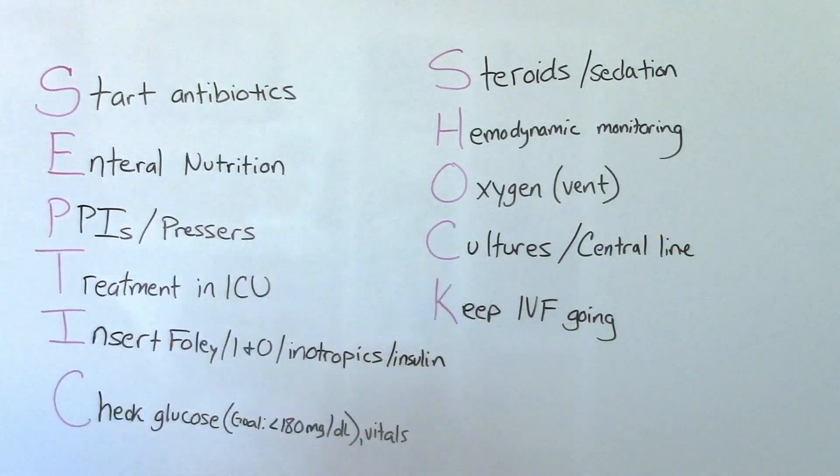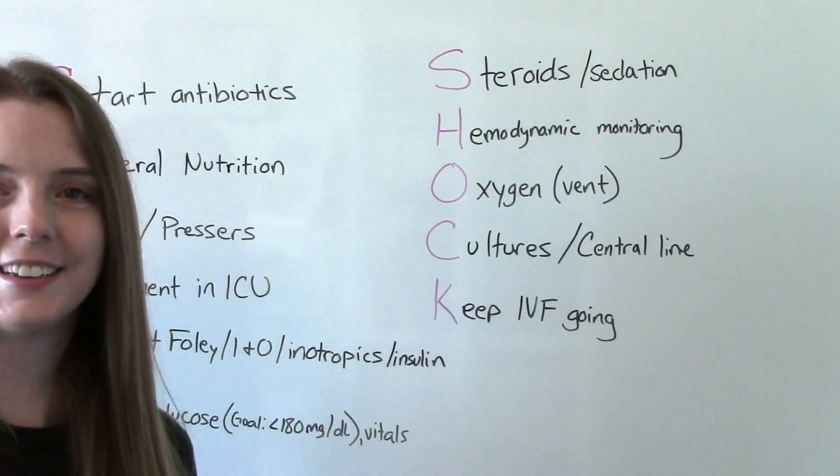That's the SEPTIC SHOCK mnemonic for nursing interventions. Septic shock needs to be taken very seriously — these patients are very ill. Complications include organ failure: every organ in the body can fail, including kidney failure, liver failure, and heart failure. Everything can go wrong and patients can die. But if we know more about it, we can catch or even prevent it and know how to take care of our patients if this ever happens.